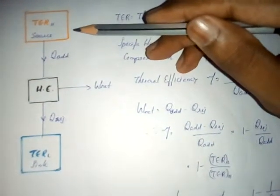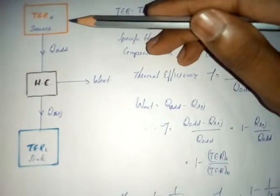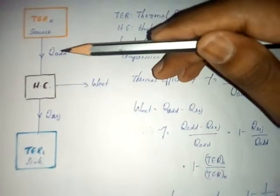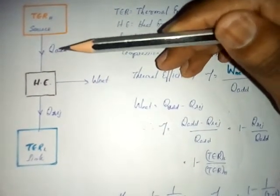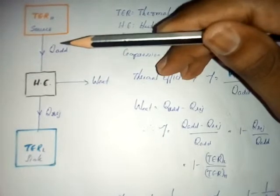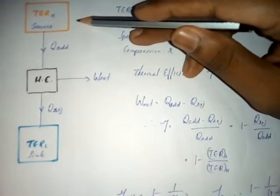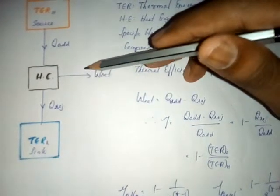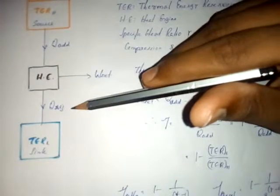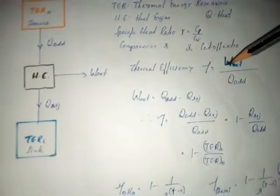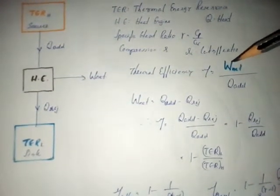According to the Kelvin-Planck statement, no engine produces 100% thermal efficiency. If an engine were 100% thermally efficient, the work produced would equal the heat added — but this is impossible, so some heat must be rejected to the atmosphere. As shown in this diagram, heat is added to the heat engine from a high-temperature source to produce work, and some heat is directly dissipated to the atmosphere without producing work.